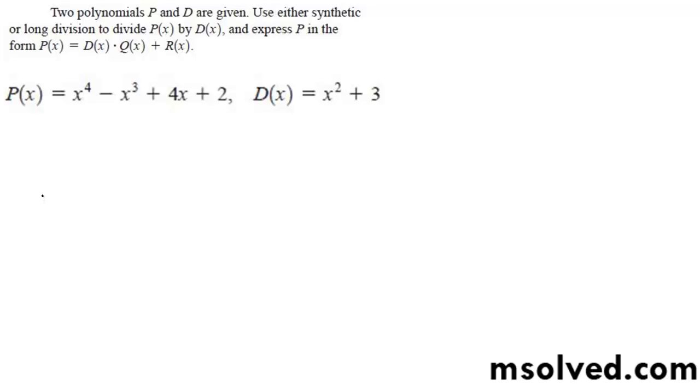Polynomial divisions. We've got x squared plus three, and we're dividing that into x to the fourth minus x cubed plus zero x squared plus four x plus two.